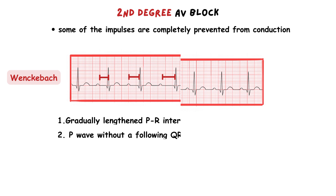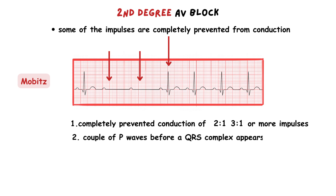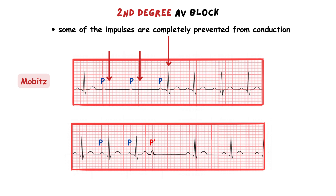With Mobitz block there is a complete block of conduction of 2, 3 or more impulses before the conduction to the ventricles occurs. So we have a couple of P waves before a QRS complex appears — 2-to-1, 3-to-1, or 4-to-1 prevented conductions. Sometimes this pattern may look like premature beats, but don't be fooled. In Mobitz the PP intervals are consistent and the P waves have the same morphology, while with premature beats the PP' interval will be shorter and the P' wave will have different morphology than the one generated at the SA node.